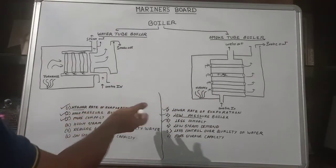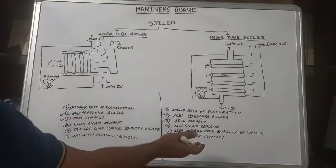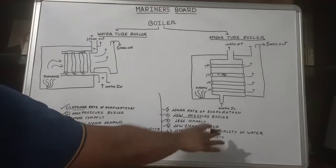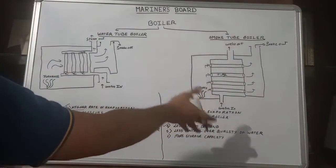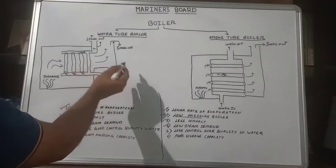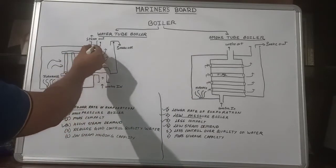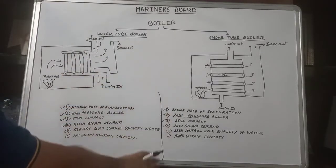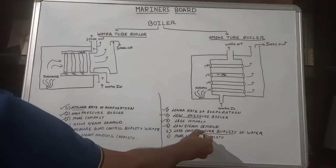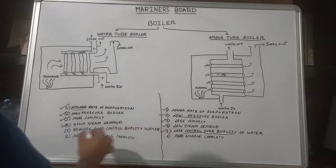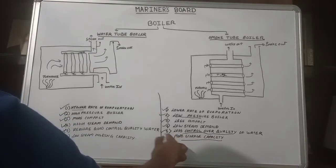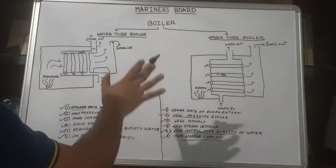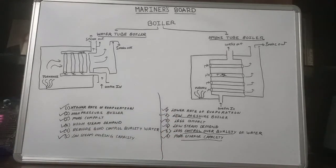In a smoke tube boiler, since water is not flowing through the tubes, we do not need much control over the quality of the water. Whereas in a water tube boiler, water flows inside the tubes, so it is very necessary to have good control over water quality. Additionally, the smoke tube boiler has more storage capacity for steam, whereas the water tube boiler has less steam storage capacity.